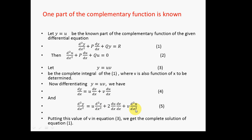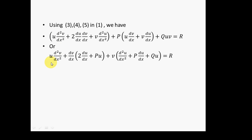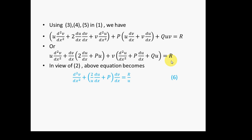Putting the values of y, dy/dx, and d²y/dx² into equation 1 and simplifying — collecting the coefficient of d²v/dx², the coefficient of dv/dx, the coefficient of v, and the remaining terms on the right-hand side equal to R — in view of equation 2, the equation takes the form: d²v/dx² + (2/u)(du/dx) + P)(dv/dx) = R/u. This is the transformed equation.